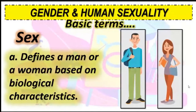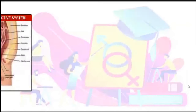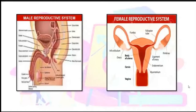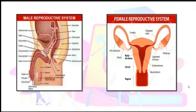We can also identify their biological characteristics through their reproductive system — not just physical appearance. For the male reproductive system, the main organs include the penis, testicles, and scrotum. For the female reproductive system, the main organs are the vagina, fallopian tube, and uterus.